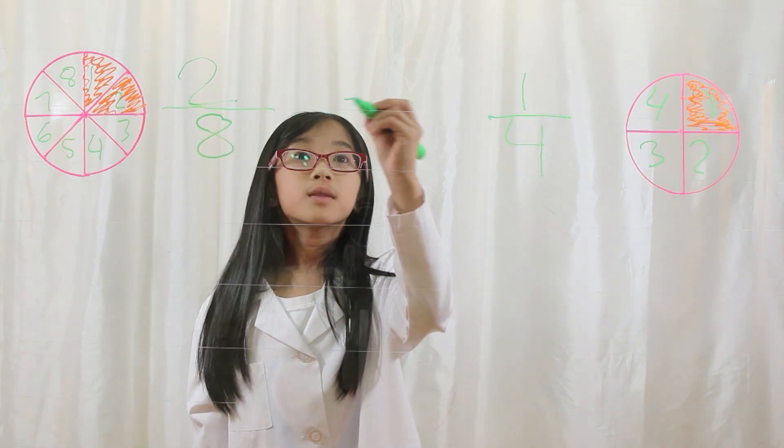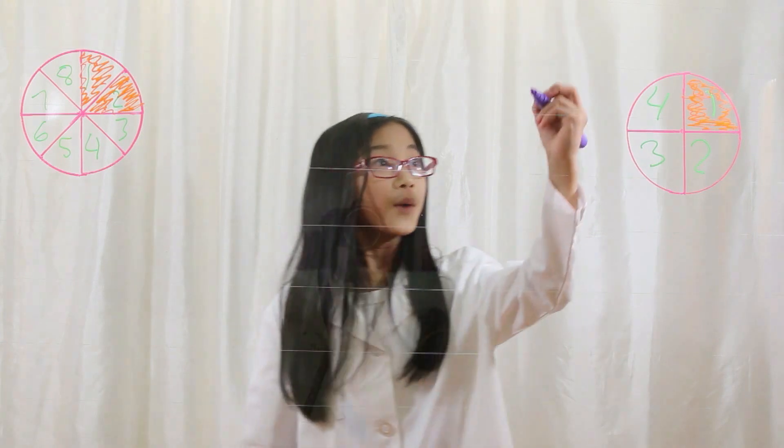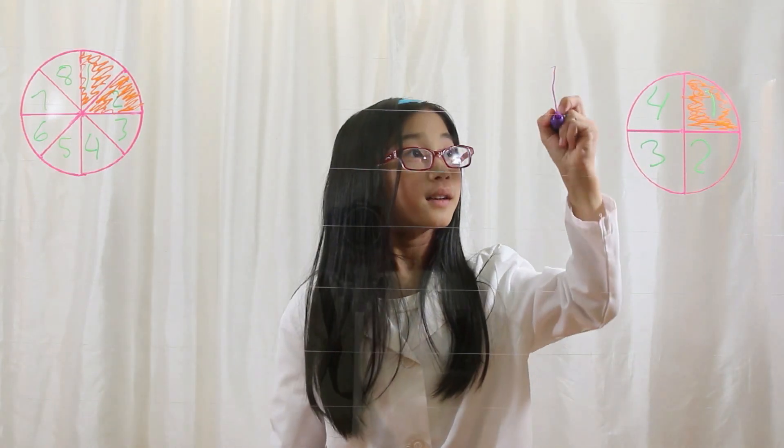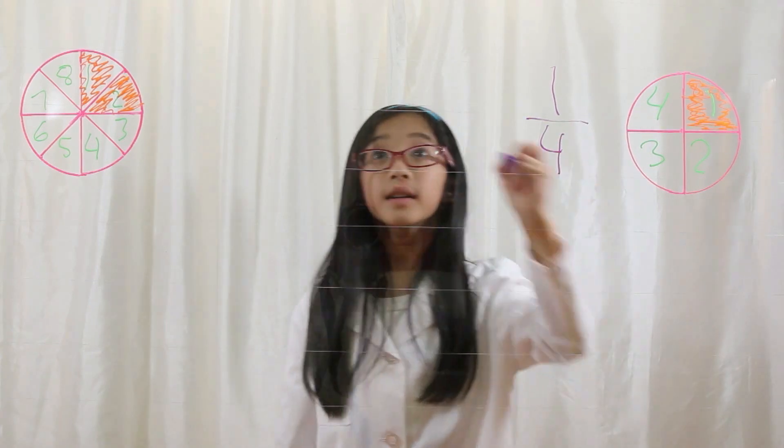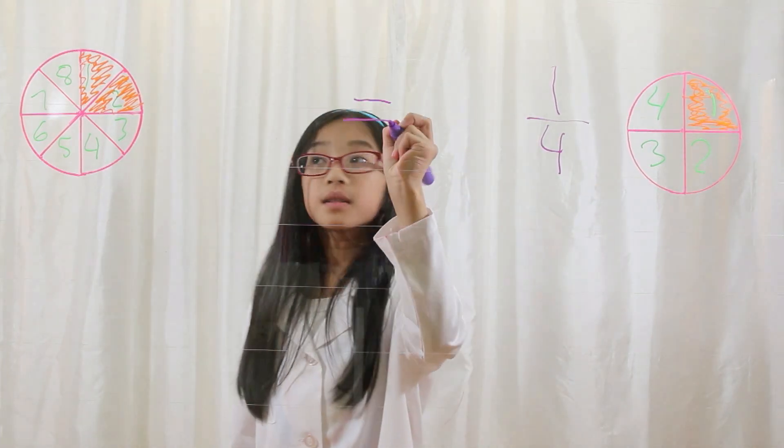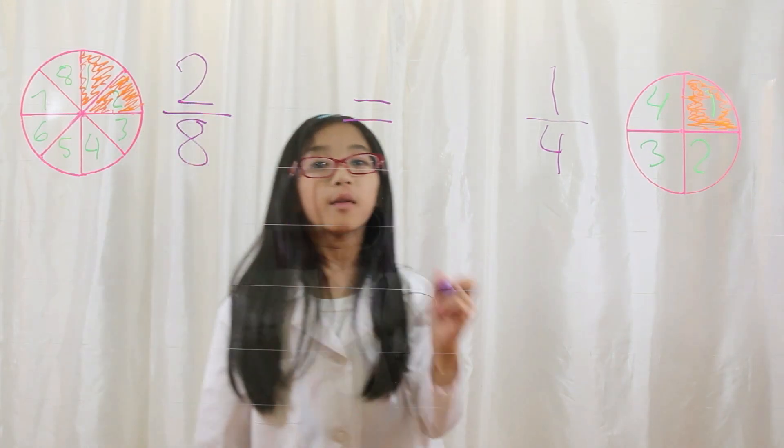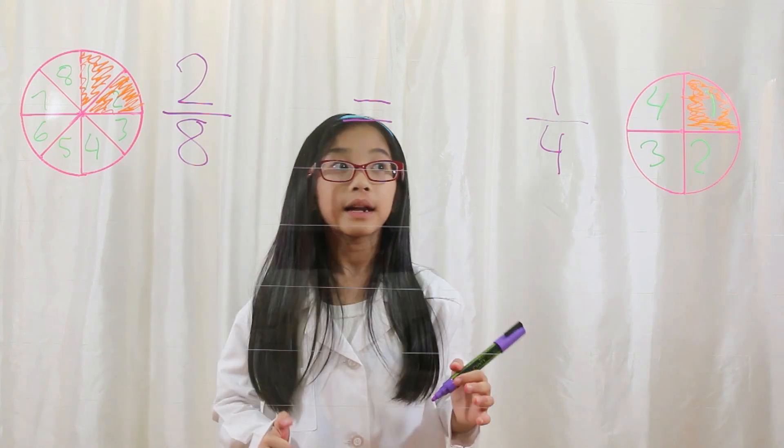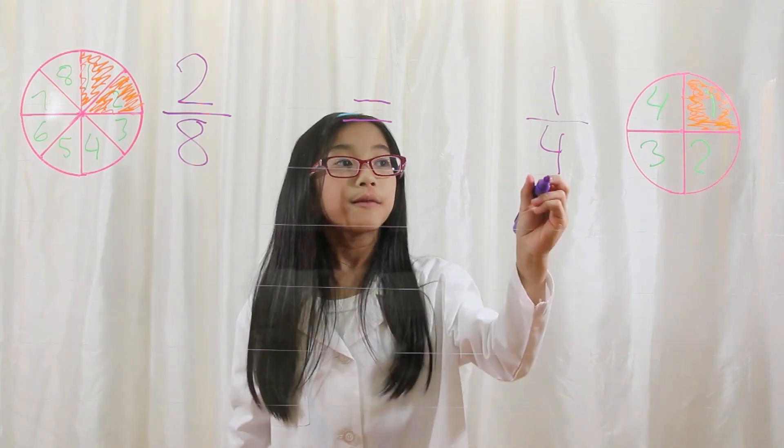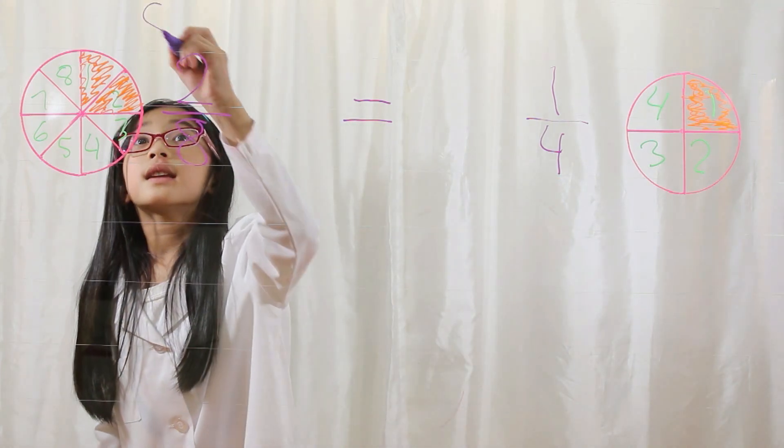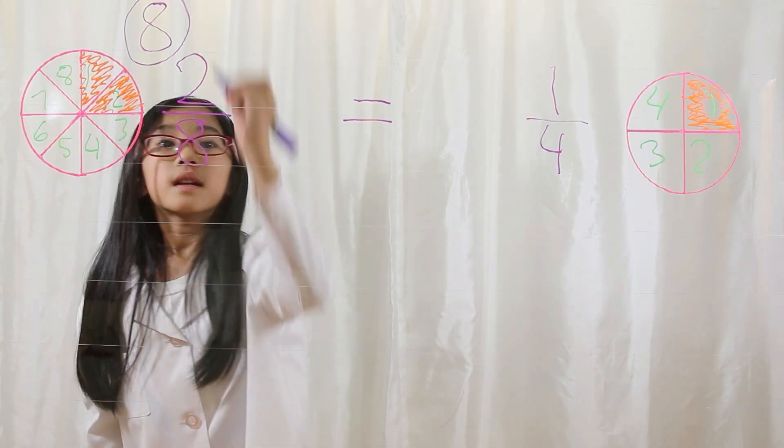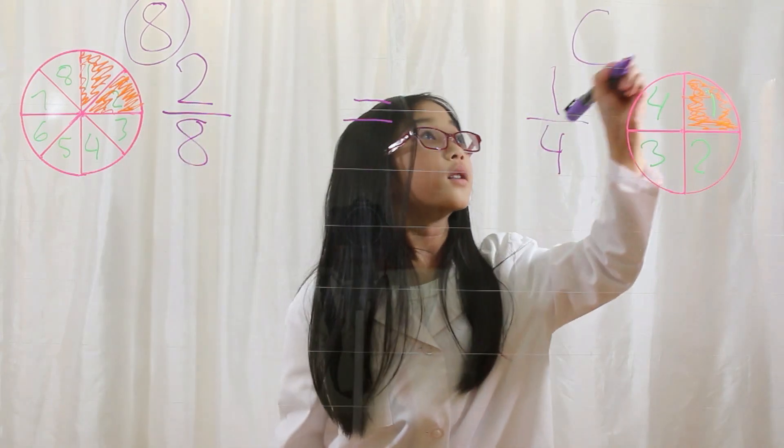Two eighths equals one fourth. One fourth equals two eighths. I will prove to you why. By cross multiplying, four times two is eight. Eight times one is also eight.